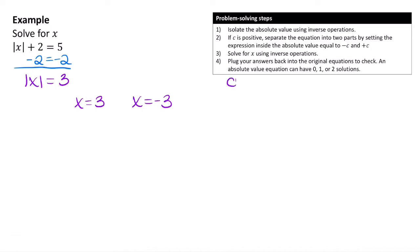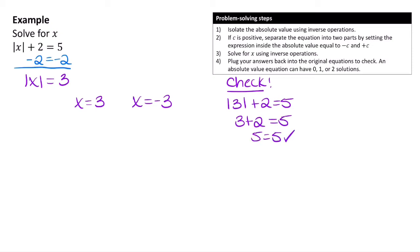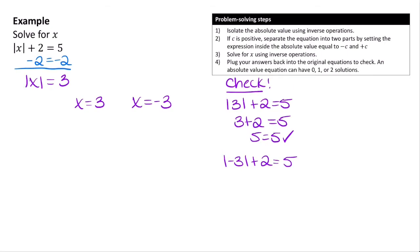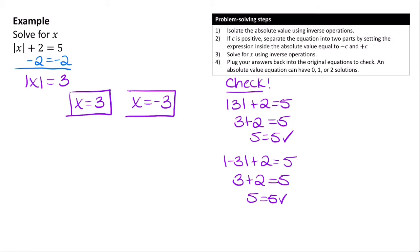Checking x = 3 in the original equation: |3| + 2 = 5, which means 3 + 2 = 5 — true. Checking x = negative 3: |negative 3| + 2 = 5, which also gives 3 + 2 = 5 — also true. So both solutions work, and the equation has two solutions.